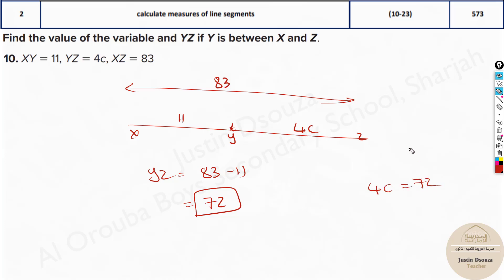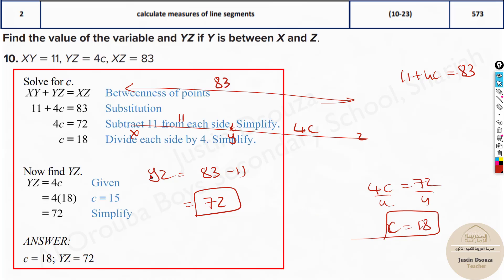Now to find 4c, once you find 72, it is very simple. 4c will be equal to 72. Otherwise, you can also do it by 11 plus 4c equals 83. You will get the same answer. Divide both sides by 4. We know this is 20 minus 2, so c will be 18.